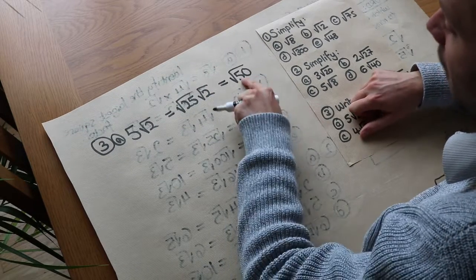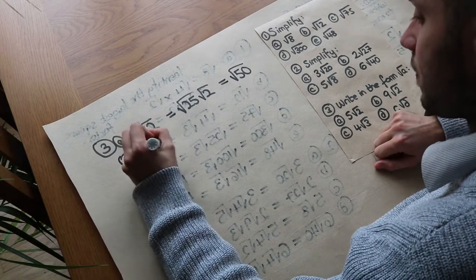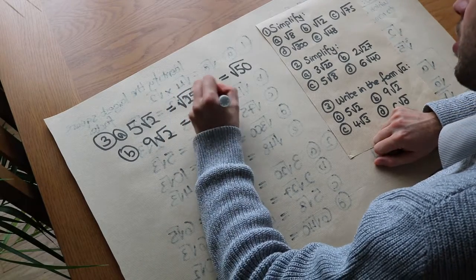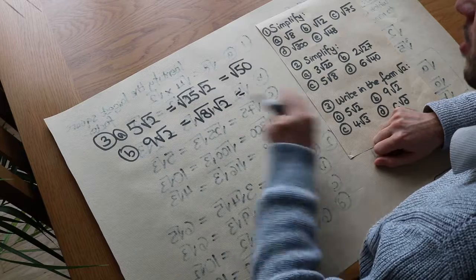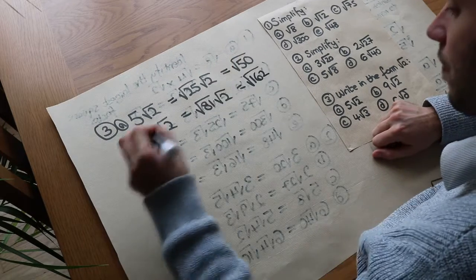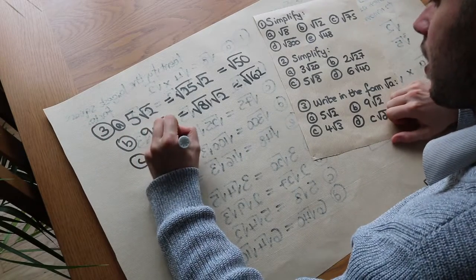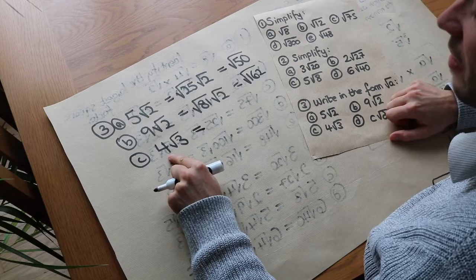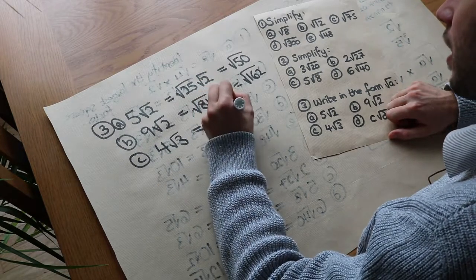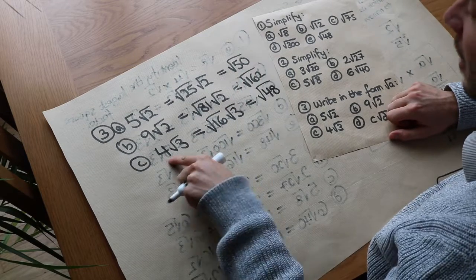What about 9 root 2? Well, 9 is the square root of 81, so we write it as root 81 times root 2. Then 81 times 2 is 162, so it's root 162. What about 4 root 3? Well, 4 can be written as the square root of 16, so it's root 16 times root 3, and 16 times 3 is 48, so it's the square root of 48.